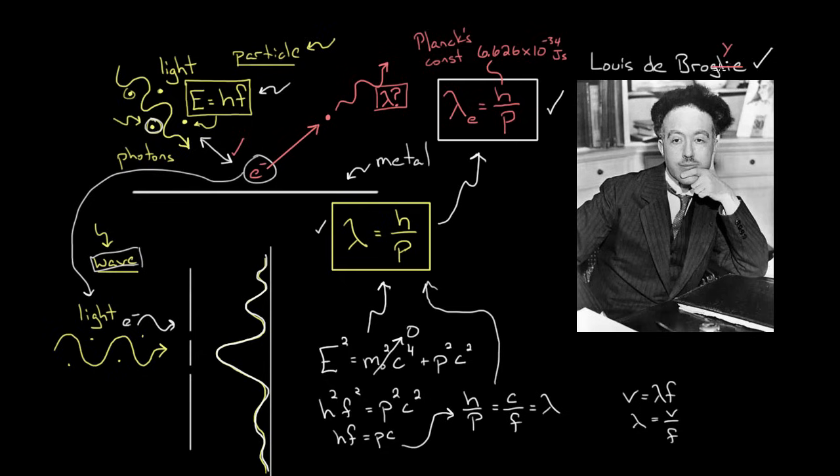Now sometimes de Broglie is given sort of a bum rap. People say, wait a minute, all he did was take this equation that people already knew about and just restate it for matter particles? And no, that's not all he did. If you go back and look at his paper, I suggest you do. He did a lot more than that. The paper's impressive, it's written beautifully. He did much more than this, but this is sort of the thing people most readily recognize him for.